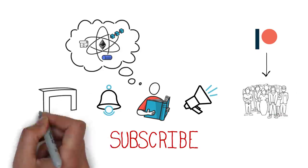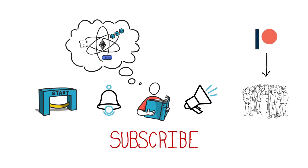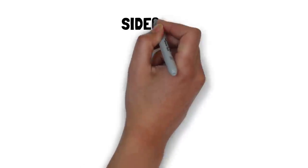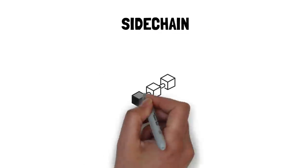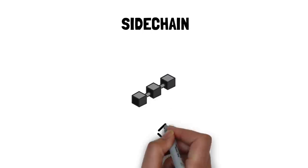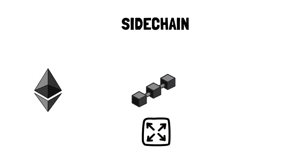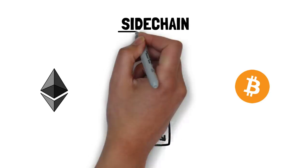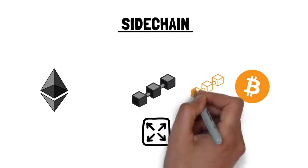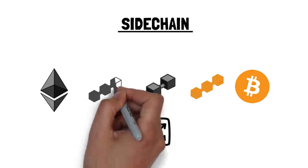Let's start with understanding what exactly a sidechain is. A sidechain, in essence, is a separate blockchain that can be used as one of the ways of scaling a layer 1 blockchain, such as Ethereum or Bitcoin. As the name suggests, a sidechain runs in parallel or on the side of the main chain.